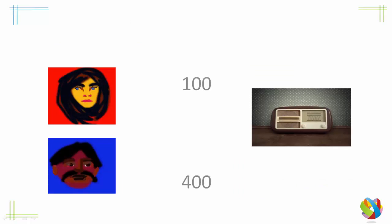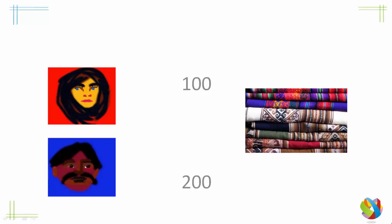Using all her resources, Mary can produce 100 radios and Peter can produce 400 radios. So we can see that Peter is better at producing radios than Mary, so we could say he has an absolute advantage in radio production. Let's have a look at cloth. Using all her resources, Mary can produce 100 pieces of cloth and Peter can produce 200 pieces.